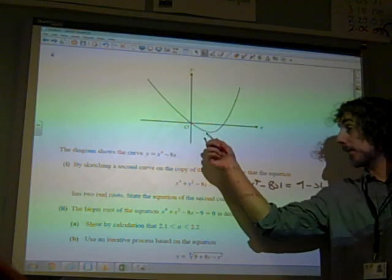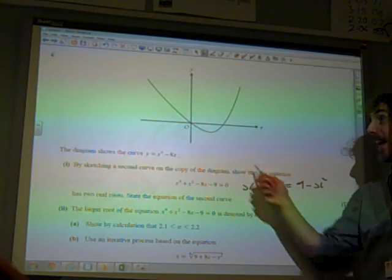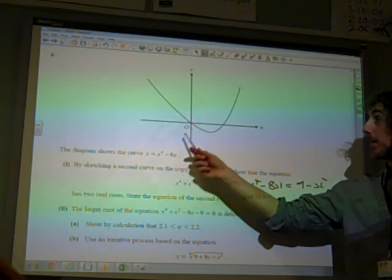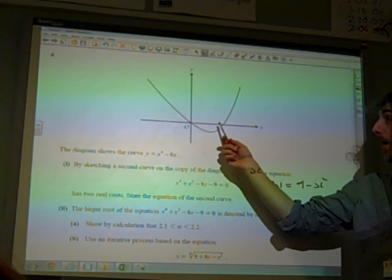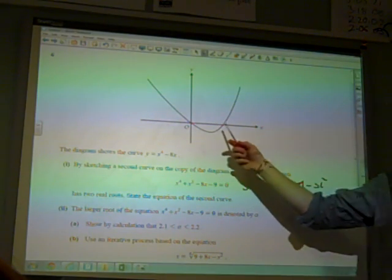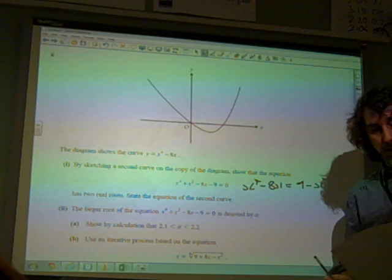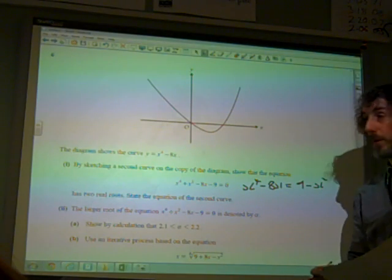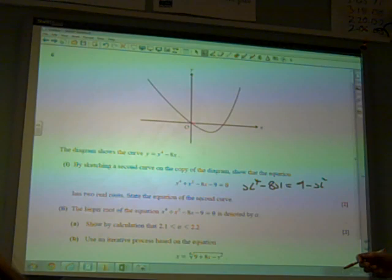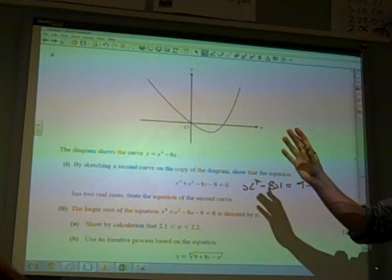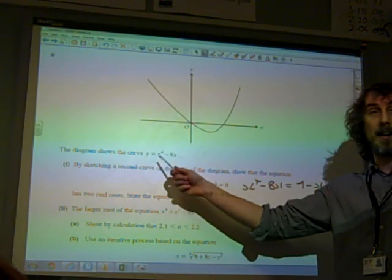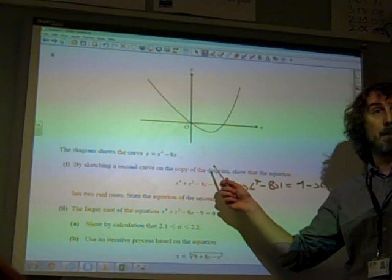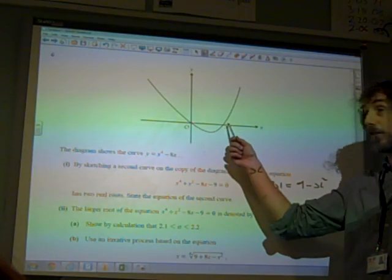We also know from this curve, this is x to the 4 minus 8x. So these points are going to be at plus or minus 8 on there. It's not plus or minus 8, sorry. Let me concentrate on this. Factorize that, that's x brackets, x cubed minus 8, isn't it?